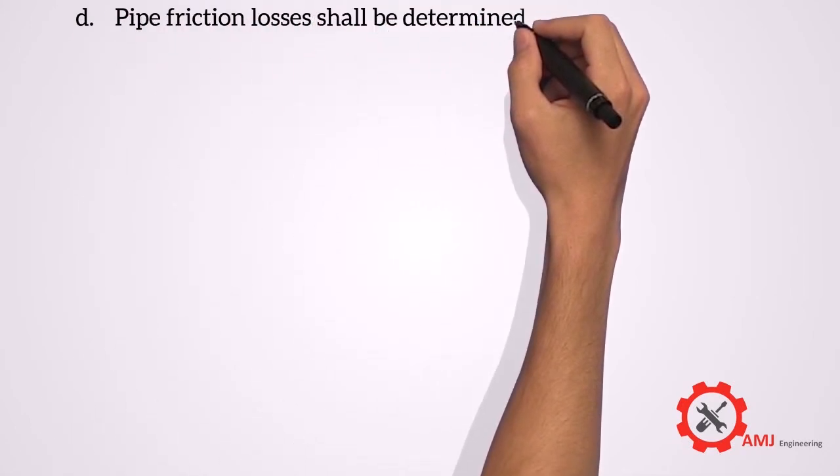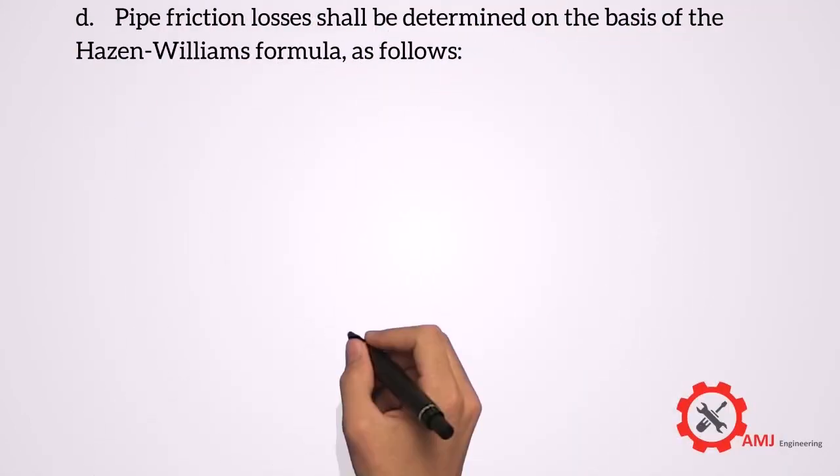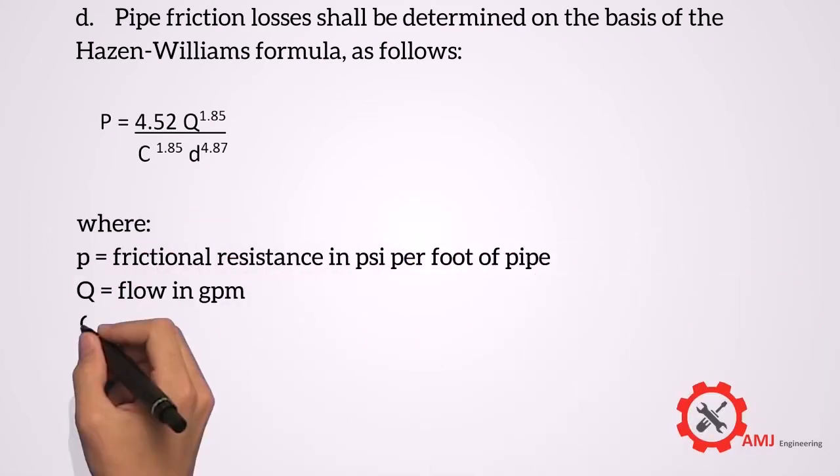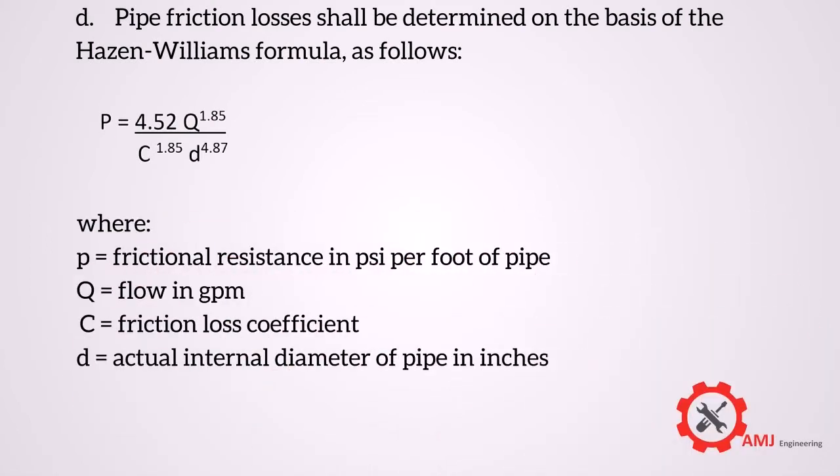Pipe friction losses shall be determined on the basis of the following Hazen-Williams formula, where P is the frictional resistance in psi per foot of pipe, Q is the flow in GPM, C is the friction loss coefficient, and D is the actual internal diameter of pipe in inches.